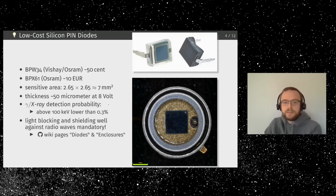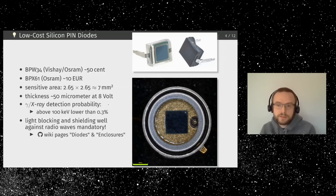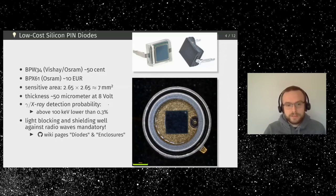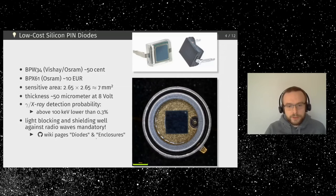Since we don't want to measure light, we have to block all light. The easiest way is to put the detector in a metal case, which also provides electromagnetic shielding. Radio waves can also influence these detectors because they are super sensitive, so it should be a complete Faraday cage — a complete metal structure. There are lots of hints and tips on how to achieve that on the wiki on this project's GitHub.